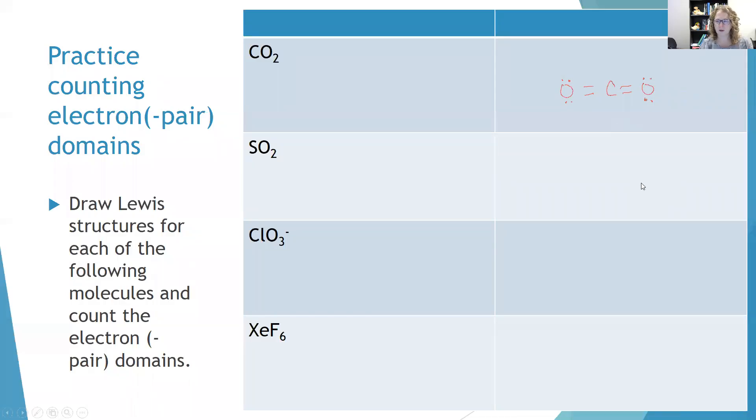The Lewis structure of CO2 looks like this, carbon double bonded to two oxygens. And what we would say is that carbon has two electron domains. I don't care about the lone pairs on the oxygens because they're what are called peripheral atoms. Usually when I talk about electron domains, it's around what's called the central atom, the one or the ones in the middle. And so carbon is what I care about.